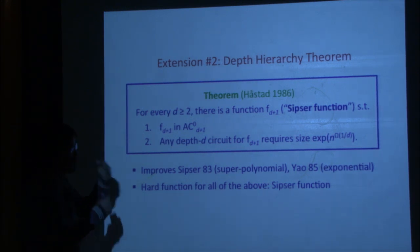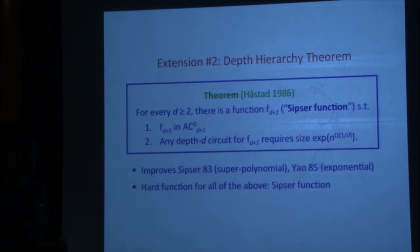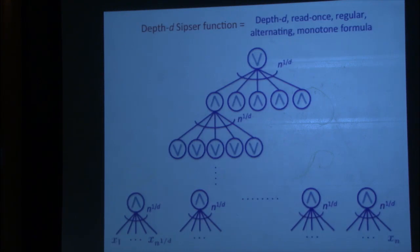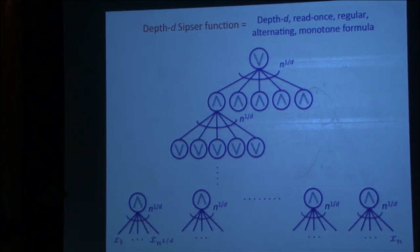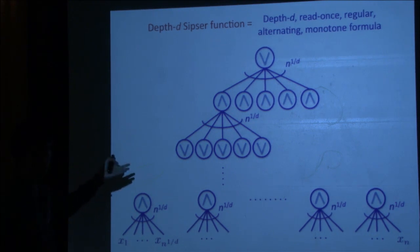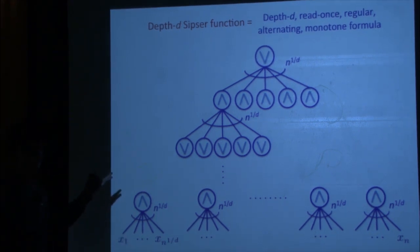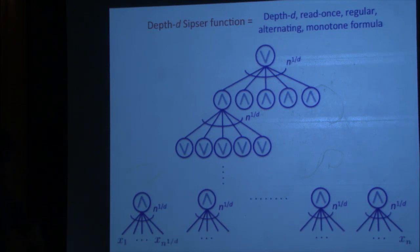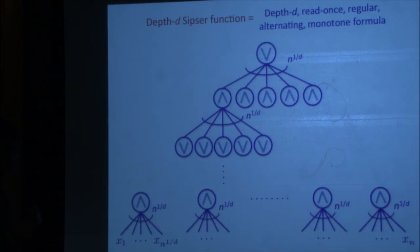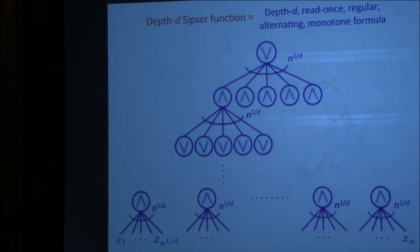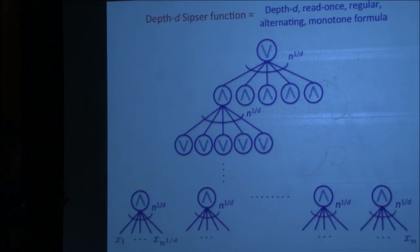This establishes a depth hierarchy theorem, showing that depth d+1 is much more powerful than depth d. The depth-d Sipser function is a depth-d, read-once, regular, alternating, monotone formula — alternating layers of ORs and ANDs with fan-in n to the 1/d, so the product is n. It's read-once, so everything is touched only once. We should think of this as like the parity of depth hierarchy theorems; it's really the right function to look at.